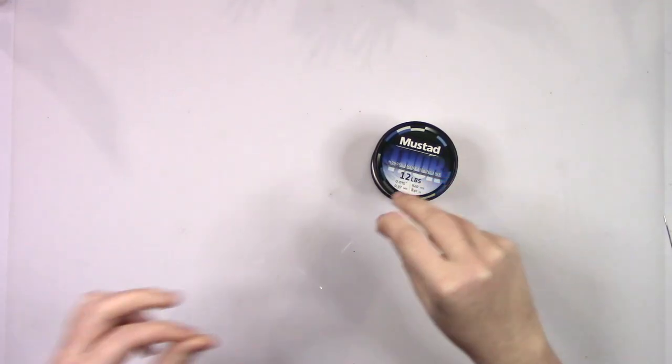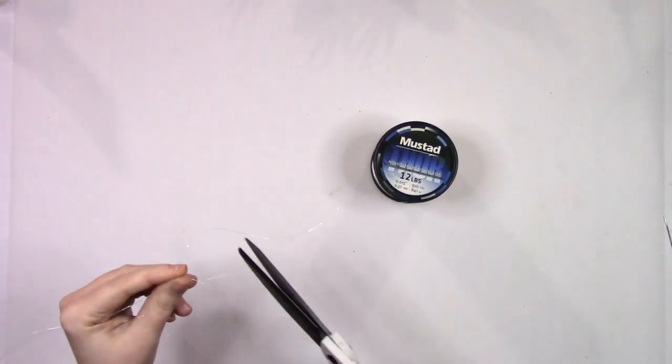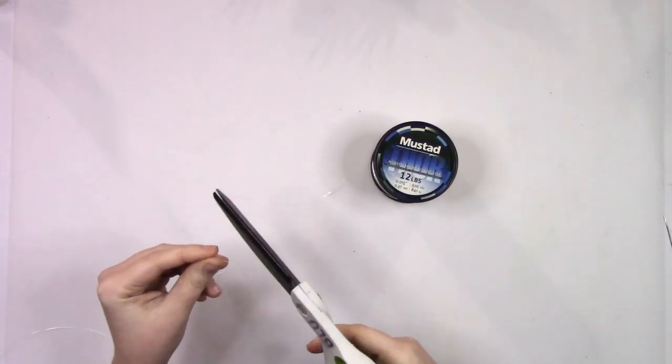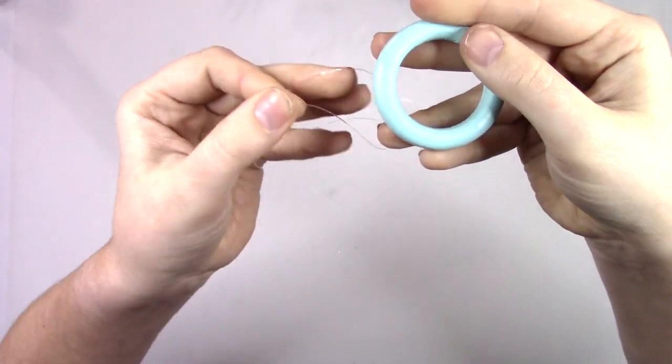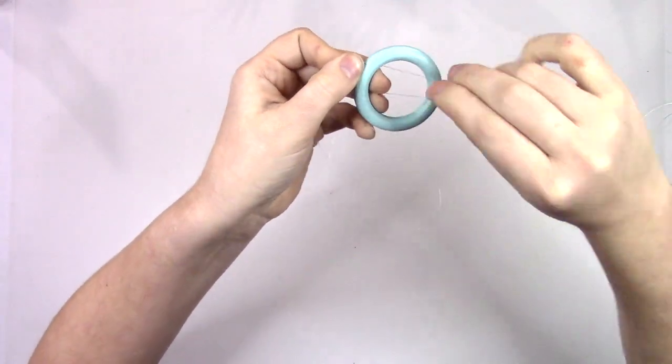The first thing I'm going to do is get some kind of string. For mine, I'm using fishing line just because I thought it would be pretty durable, and I'm going to cut it into six pieces.